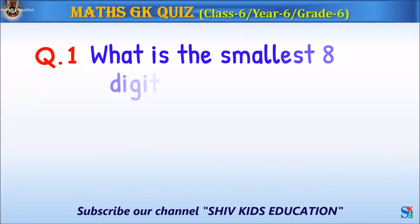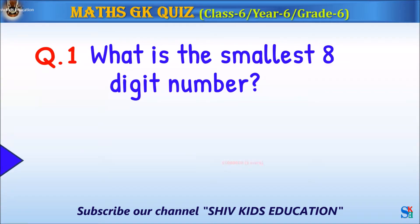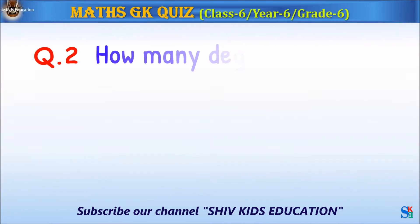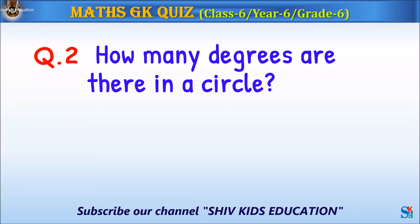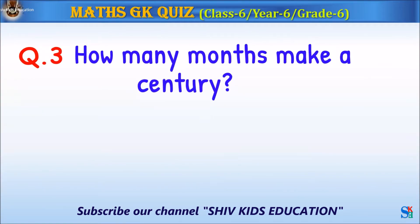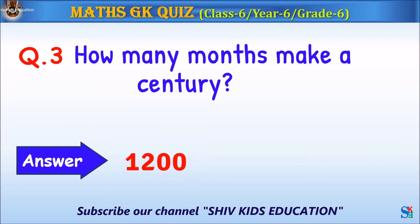Question 1: What is the smallest 8-digit number? The answer is one crore. Question 2: How many degrees are there in a circle? The answer is 360 degrees. Question 3: How many months make a century? The answer is 1,200.